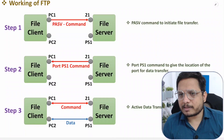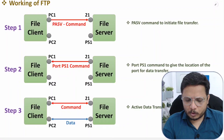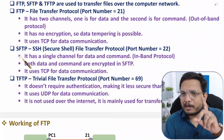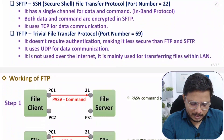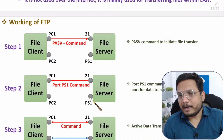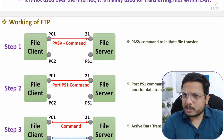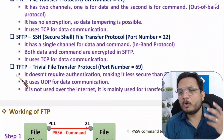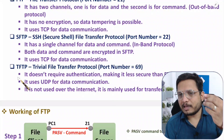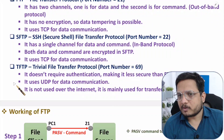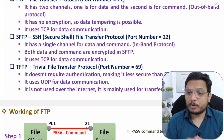That is how FTP works. For SFTP, the only difference is there is a single channel for both data and commands — otherwise the steps remain the same. For TFTP, there is no authentication; data is transferred directly over a single channel using UDP.